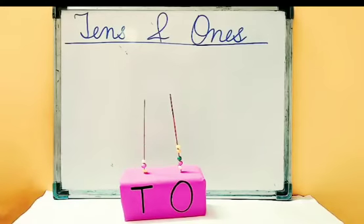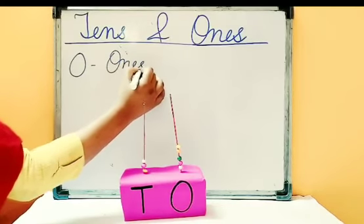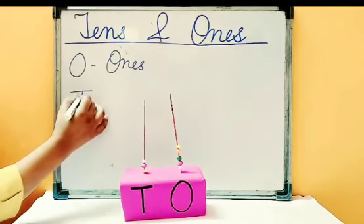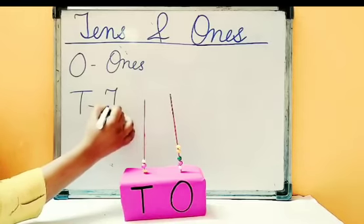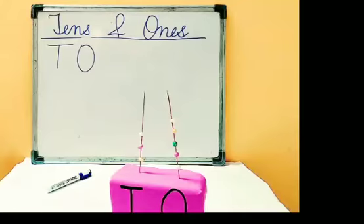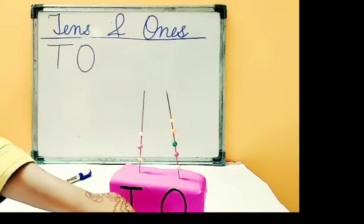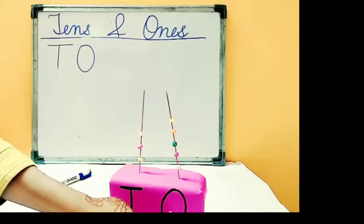And the next of the spikes which is on the left hand side denotes at tens place. Here, O represents ones and T represents tens. Now, it's time to count the beads. Firstly, we will count ones beads.